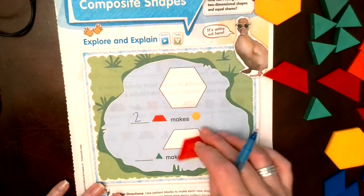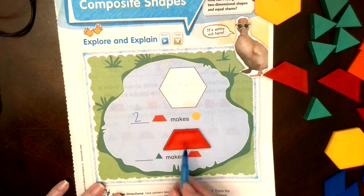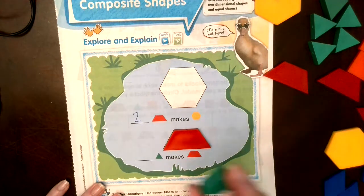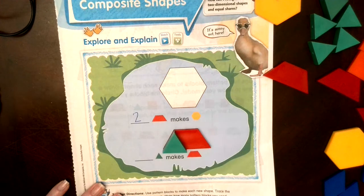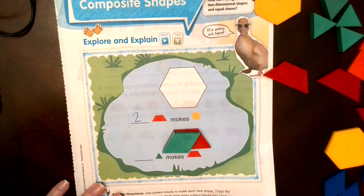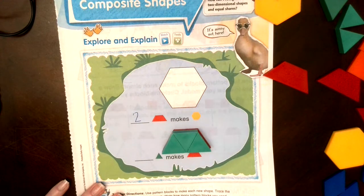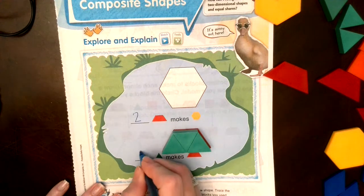And then down here we have a trapezoid. We want to know how many triangles I need to make the trapezoid. So I take one and turn that, two and three. If I put three triangles together it makes one trapezoid. Isn't that fun?